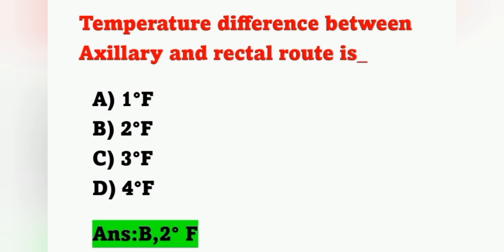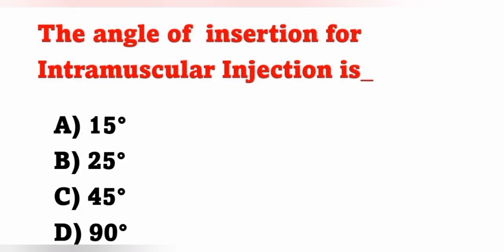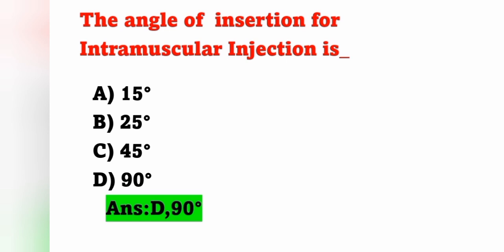Next question: the angle of insertion for intramuscular injection is — options: A) 15 degrees, B) 25 degrees, C) 45 degrees, D) 90 degrees. For IM injection the angle is 90 degrees — option D. For subcutaneous injection it is 45 degrees, and for intradermal injection it is 15 degrees.